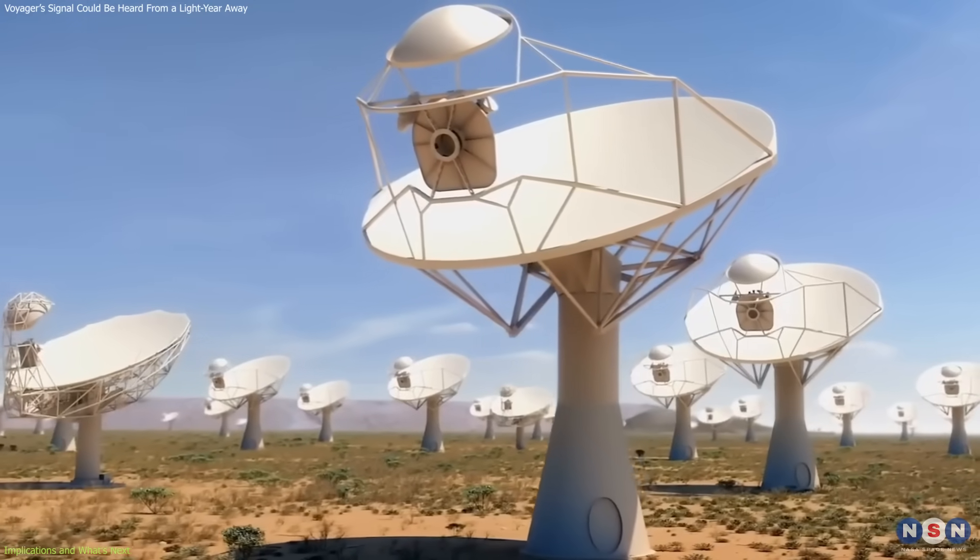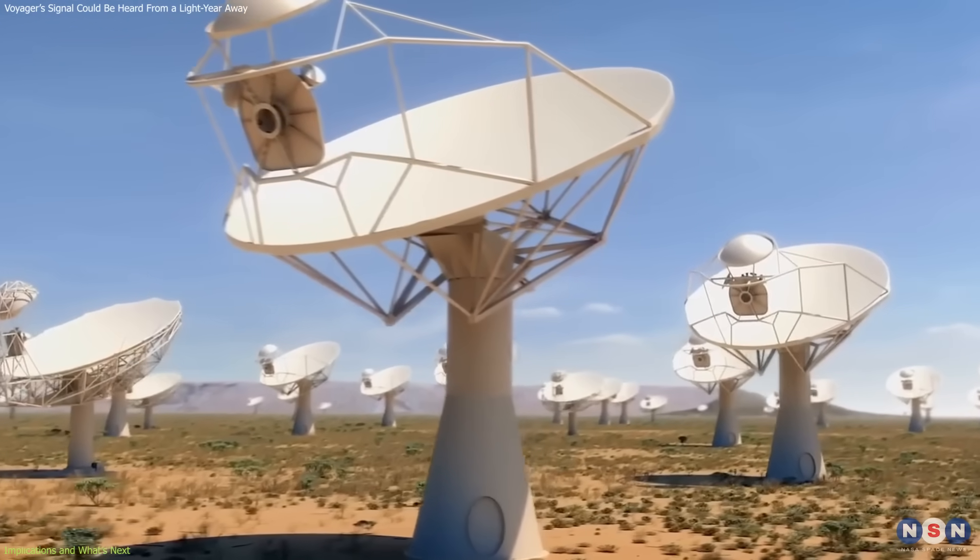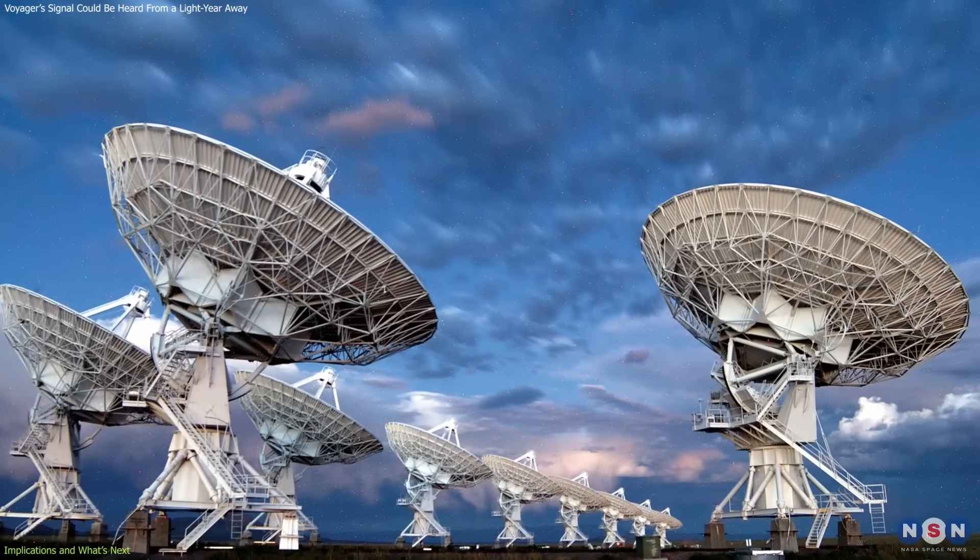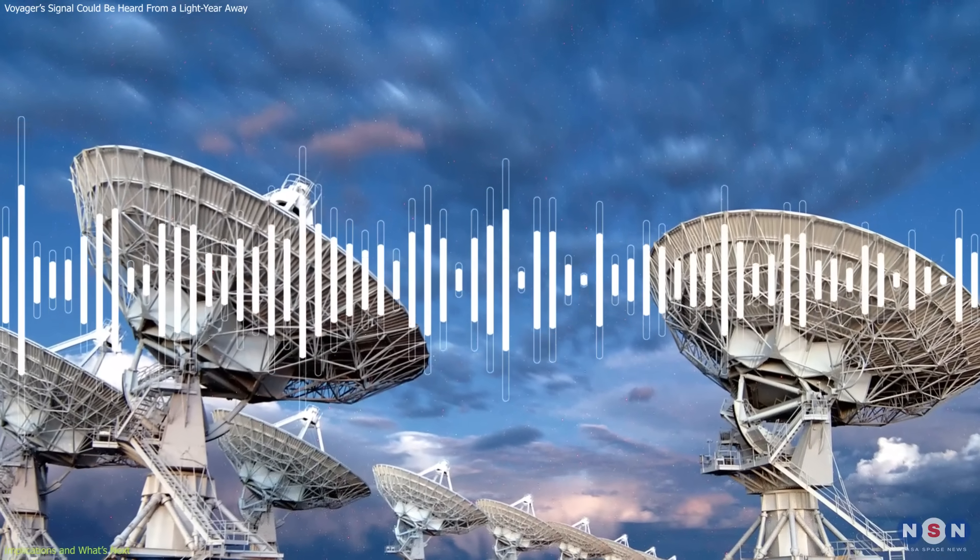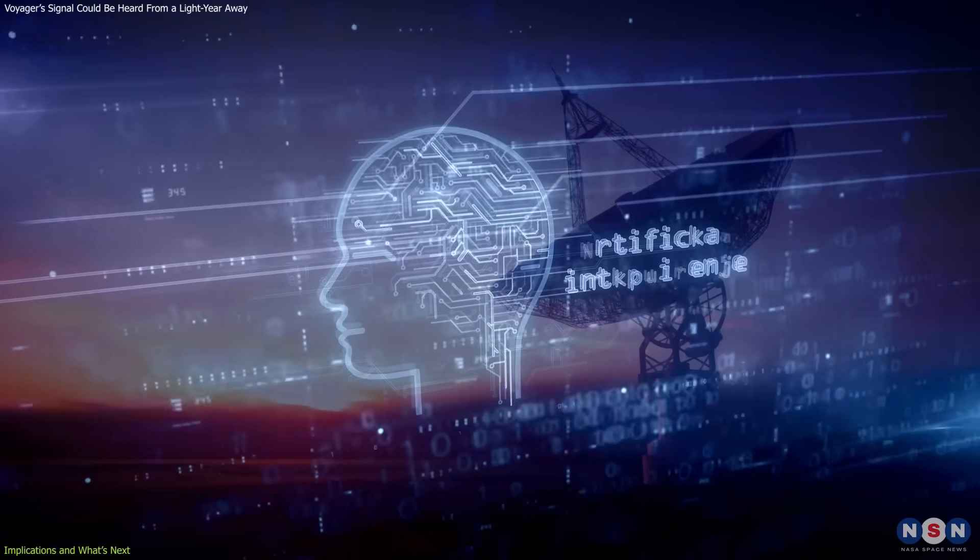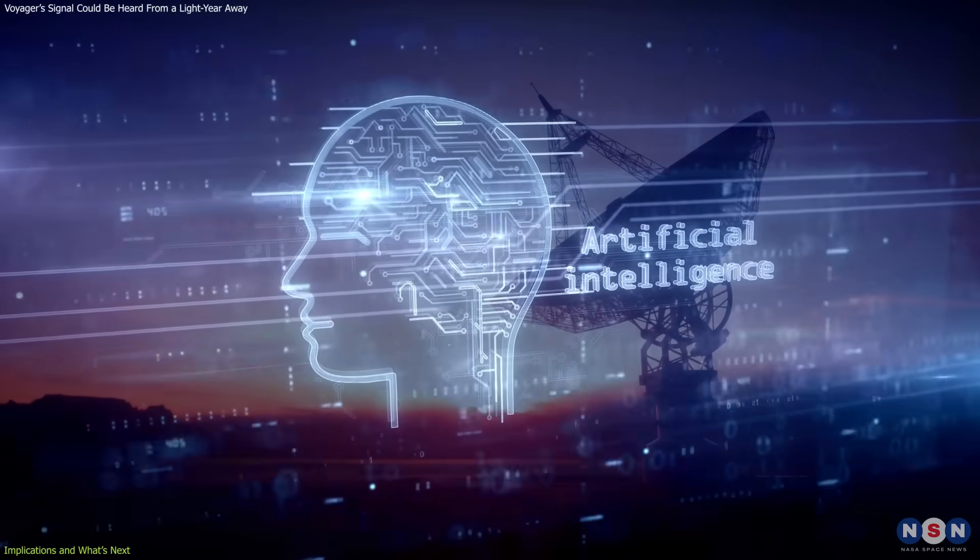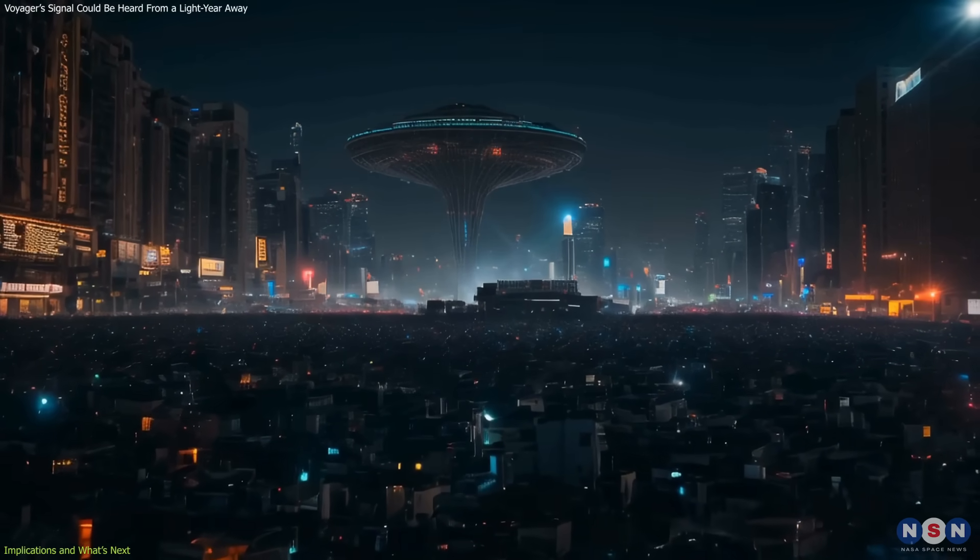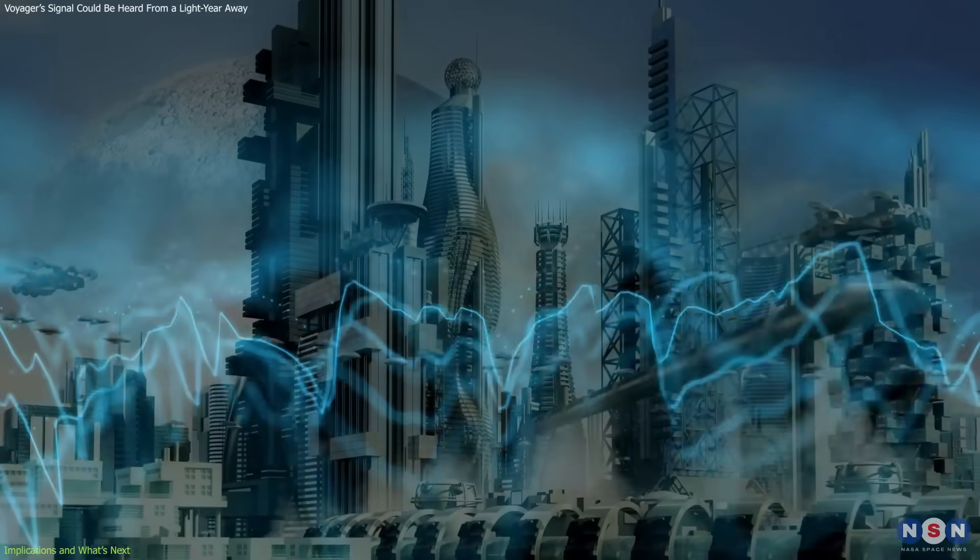Future observatories, such as the Square Kilometer Array (SKA) and the Next Generation VLA, will have the sensitivity needed to detect fainter and more distant signals. Coupled with machine learning tools to filter and classify anomalies, this opens up the possibility of identifying civilizations not by what they say, but simply by what they emit.